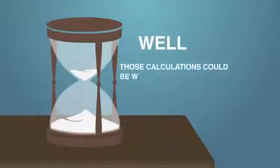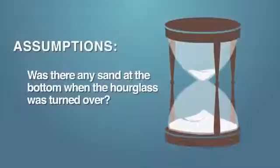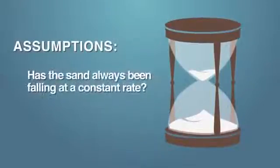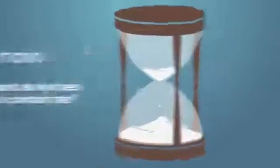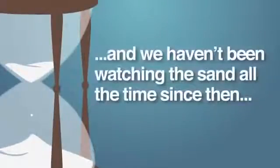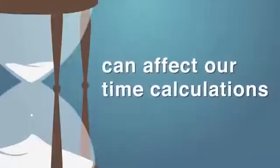Well, those calculations could be wrong, because we may have failed to consider some major assumptions. Like, was there any sand at the bottom when the hourglass was turned over? Has any sand been added or taken out of the hourglass? Has the sand always been falling at a constant rate? Since we did not observe the initial conditions when the hourglass started, and we haven't been watching the sand all the time since then, we must make assumptions. All three of those assumptions can affect our time calculations.